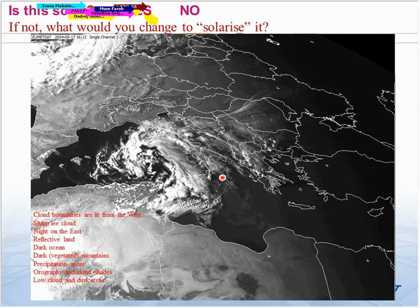You see shades sometimes in solar images, especially at sunrise and sunset — you can see the 3D structure of cloud systems, which is very useful to analyze the strength or the height of these systems.